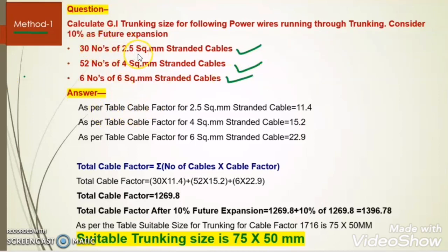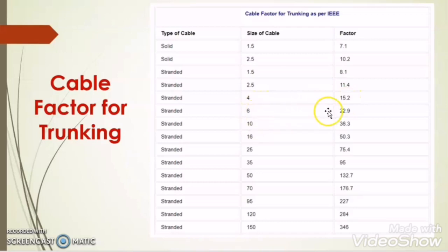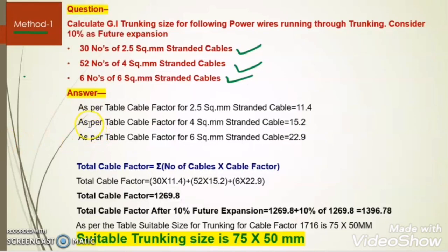Here there are 3 types of wires: 2.5 sq mm, 4 sq mm, and 6 sq mm. From the chart we get the factor for these 3 sizes of wires. The factor for 2.5 sq mm wire is 11.4, for 4mm wire is 15.2, and for 6 sq mm wire is 22.9.